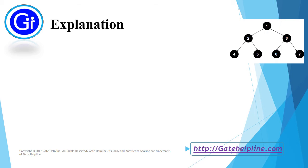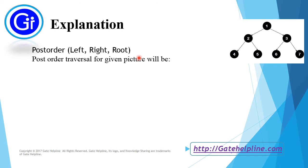Now we will see post-order traversal for the given tree. In post-order traversal, we first traverse the left subtree, then traverse the right subtree, and then visit the root. This is the root — so traverse left subtree, again traverse left subtree, again traverse left subtree, which is empty. Since there is no left subtree or right subtree, this root is visited. So 4 comes first. Then we traverse the right subtree — this is the right subtree for this node, so this is visited. Now we visit the root — 4 and 5 — so this is visited.